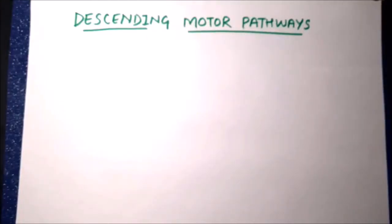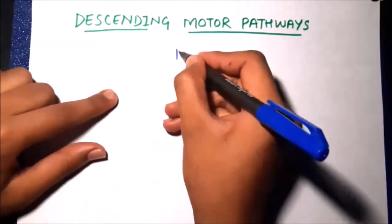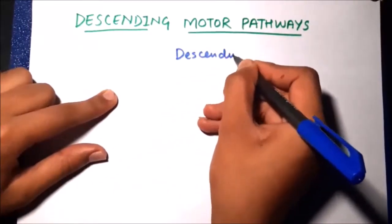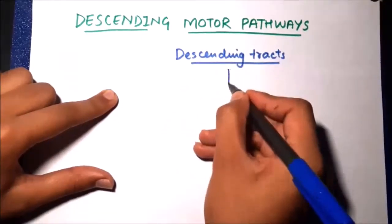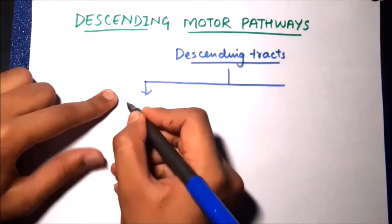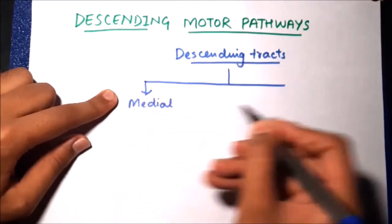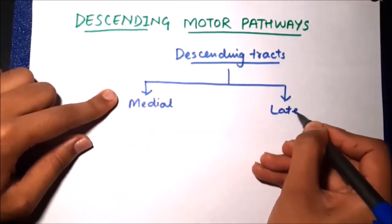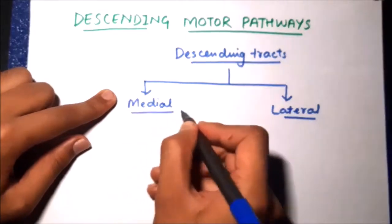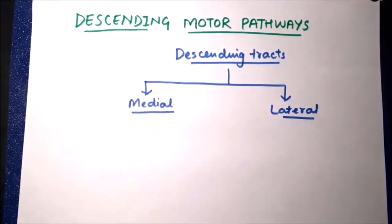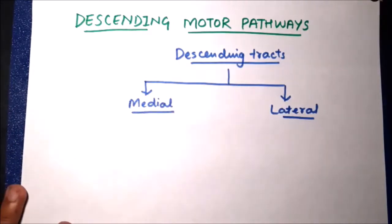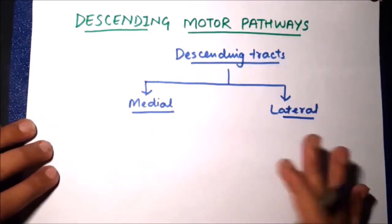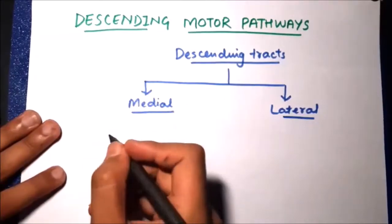In this section we are going to have a discussion of the descending motor pathways, also called as descending tracts. There are two main types of descending tracts: the medial descending tracts and the lateral descending tracts. This classification is based on the location of these tracts in the central nervous system and their functions, which are also different.